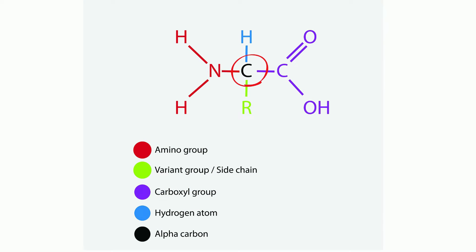In the center, you'll see carbon. It's called the alpha carbon, and it can attach to four items. On the left, you have an amino group, and on the right, you have a carboxyl group.